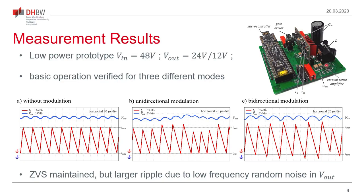To validate this concept, a basic prototype was built as shown on the right side. It is controlled by a microcontroller, with a half-bridge board, output inductor, input capacitor, and a current sense amplifier. All control circuits are implemented in a mixed-signal microcontroller. Three different operating modes are shown in the waveforms. On the left we see operation without any modulation — standard triangular current mode with thresholds set by the average output current, and Imin set to achieve ZVS. The blue trace shows the output voltage variation, which is more or less constant with only normal high-frequency ripple.